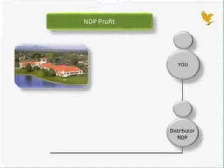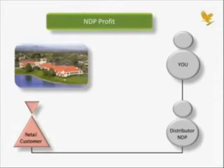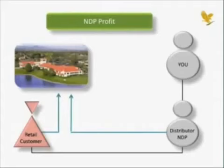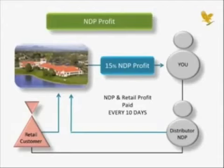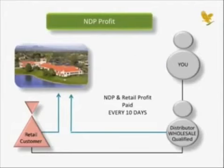Once wholesale qualified, your personal discount and retail profit both increase permanently to 30% of the retail price. You also have the privilege of sponsoring others as distributors who develop retail clients. When your directly sponsored distributors or their retail clients order product, the company sends you an NDP profit of 15% of the retail value. This profit, along with any retail customer profit, is deposited into your bank account every 10 days. When distributors become wholesale qualified, this NDP profit is no longer paid to you; however, their volume continues to benefit you in the form of level advancements and bonuses.